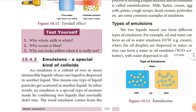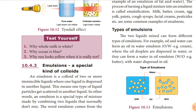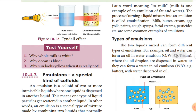Some questions: Why is milk white? Milk is a type of emulsification of fat and water. Milk is white because it reflects all wavelengths of visible light, due to the chemical composition of milk and the size of the particles contained in it.